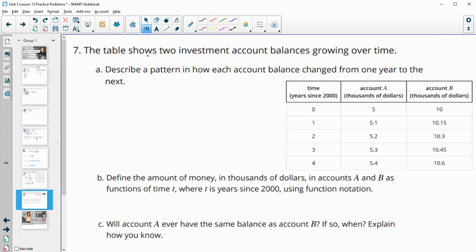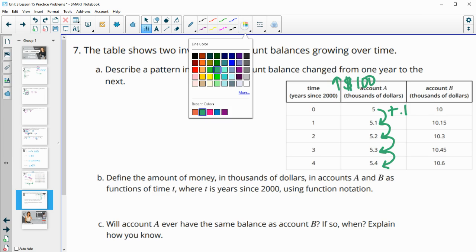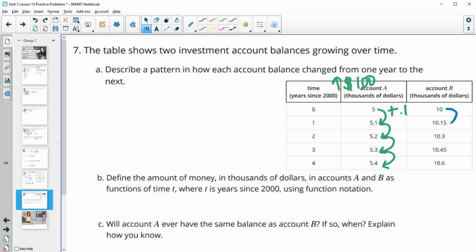All right, in number 7, the table shows two investment account balances growing over time. Describe the pattern on how each account balance changed from one year to the next. So account A starts at $5,000. Then it goes to $5,100, $5,200, $5,300, $5,400. So each year, this one's growing by $0.1 thousand or $100, so this one's going up $100 each year. The second one starts at $10,000 and is going up 0.15 per year, because we're going 10 to 10.15 to 10.3 to 10.45 to 10.6. So this one's going up 0.15, which is $150, so this one's going up $150 each year.